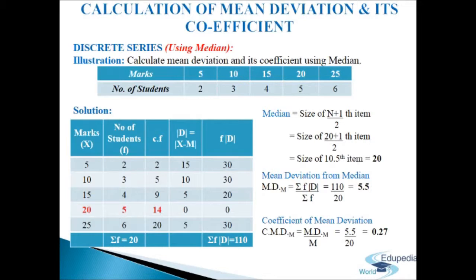Cumulative frequencies: 2, 2+3=5, 5+4=9, 9+5=14, 14+6=20, so sigma f = 20. Median = size of (n+1)/2 item = (20+1)/2 = 10.5th item. The 10.5th item falls in cumulative frequency 14, so median = 20.